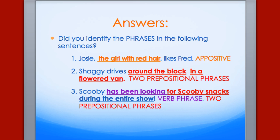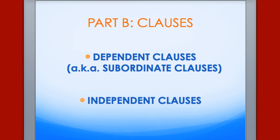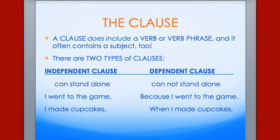Hopefully you were able to identify all of those. Now we're going to move on to our clause section of the PowerPoint. We have our dependent clauses — also called subordinate clauses or subordinating clauses — and we also have our independent clauses. A clause does include a verb or a verb phrase, and it often contains a subject, although sometimes the subject is just implied.